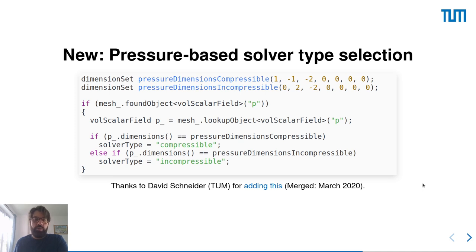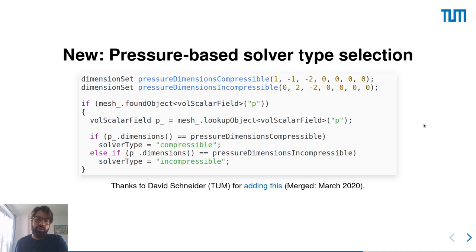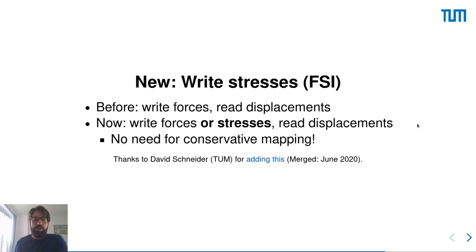I would like to point you to some pull requests, mainly by David Schneider, that are worth looking at. First, we now detect the incompressible or compressible type of the solver using the dimensions of the pressure, which is the nice OpenFOAM way. Then we can now also write stresses, which is an advantage since we don't need to use conservative mapping, and makes it easier to use OpenFOAM with solvers that don't support reading forces but only stresses. This was in the beginning TL2.